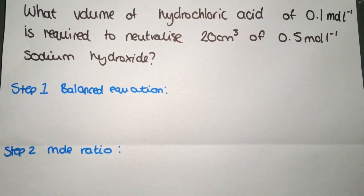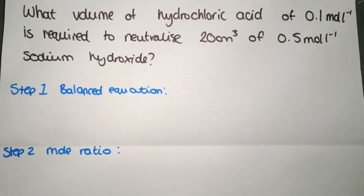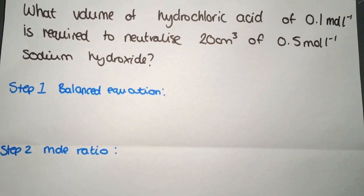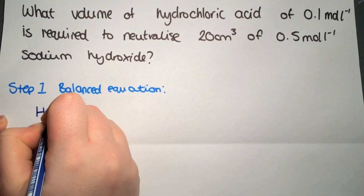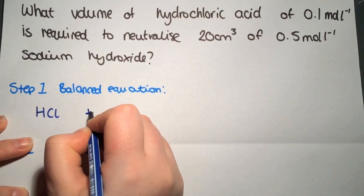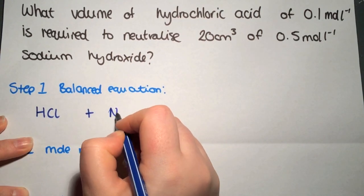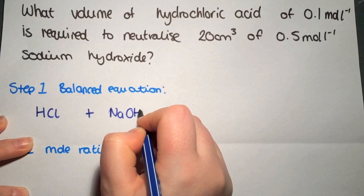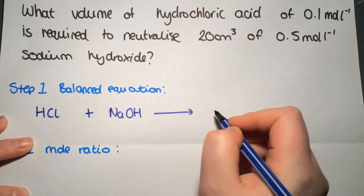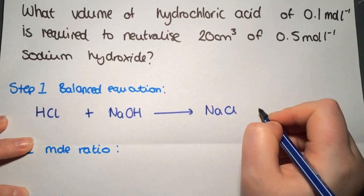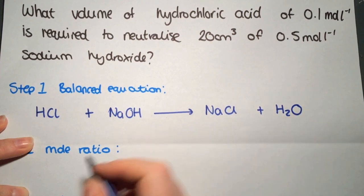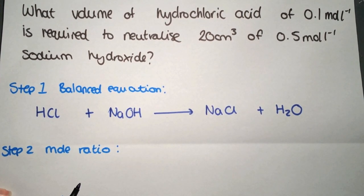The first step to doing any titration calculation is to have a look at the balanced equation. If there's not a balanced equation there, then you're going to have to write one. We have hydrochloric acid, HCl, plus sodium hydroxide, NaOH. It's a neutralization reaction, so we're going to get salt, sodium chloride, and water. This reaction is already balanced.